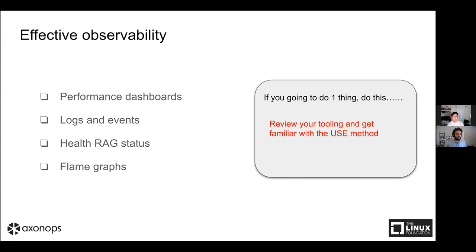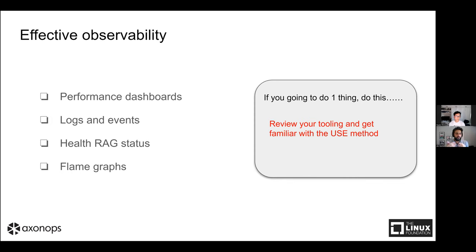The next topic is observability - one of my favorite topics. Observability is interesting because just having dashboards doesn't mean you have observability. Being able to interpret the information and build a mental model of what's happening - from your hardware to Cassandra to the application - is really important. You don't just measure one thing and determine the result of everything from one measurement. Observability has layers, just like benchmarking.